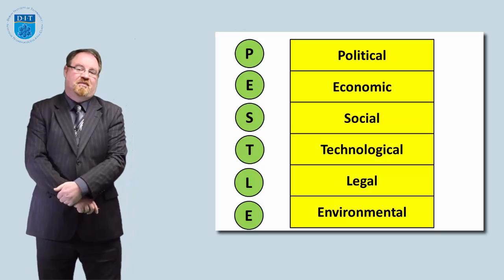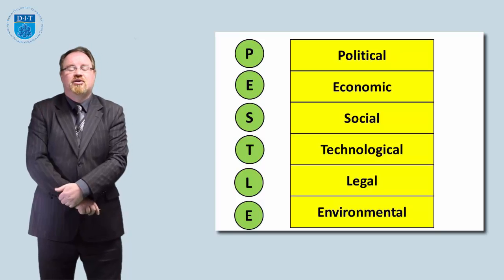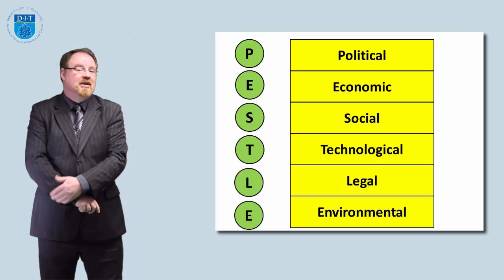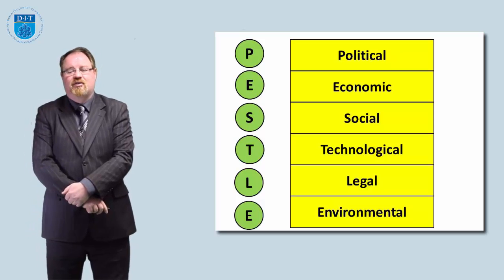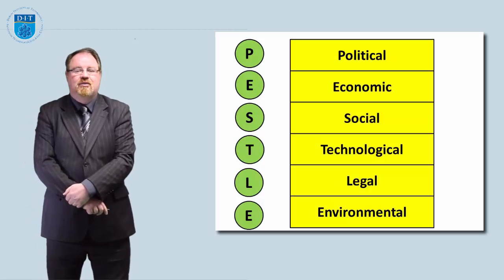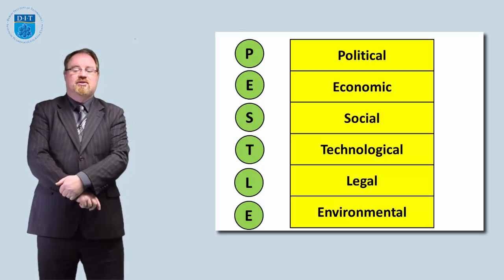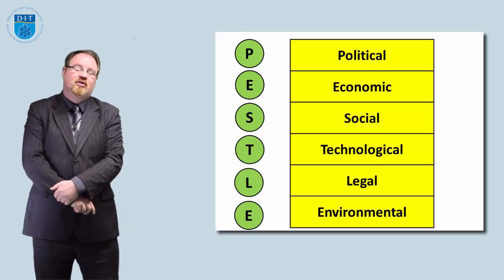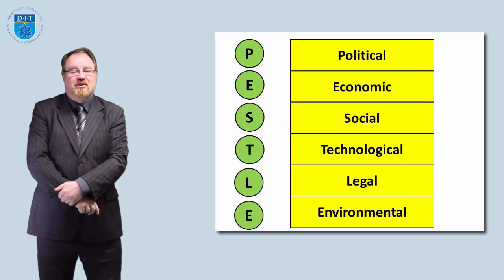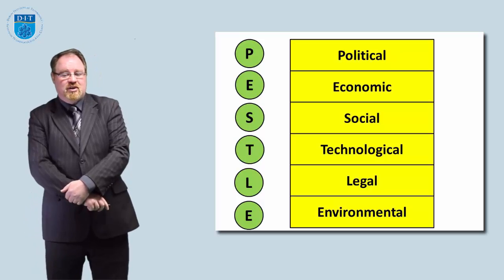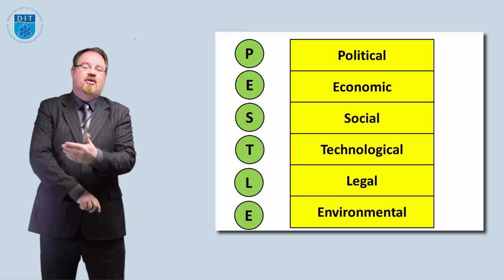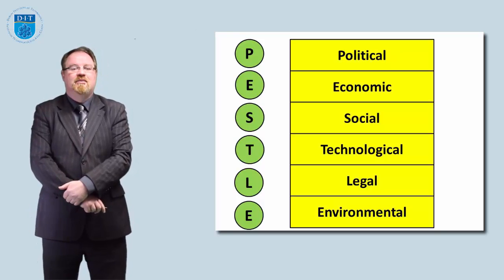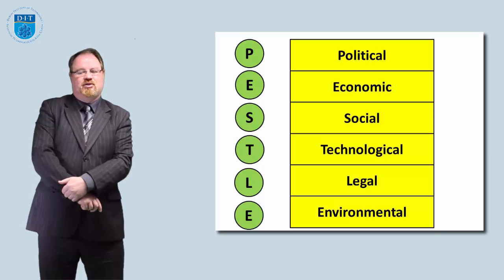Let's say we were discussing the computer. We could look at the creation and spread of the computer from the political point of view, what were the economic factors that encouraged the creation and spread of computers, what are the social factors, the technical factors, the legal issues that encouraged or discouraged the spread of technology, and what are the environmental concerns. We're going to look at each of the six perspectives or lenses one at a time and understand the kinds of questions we might think around each one.